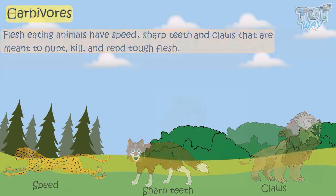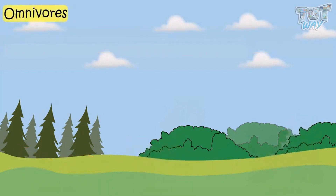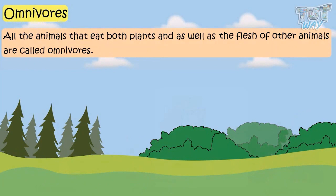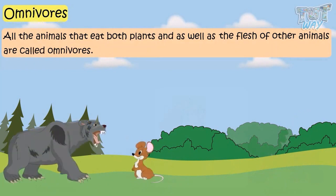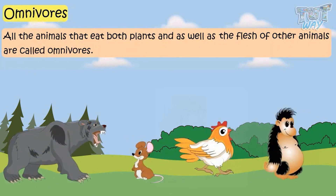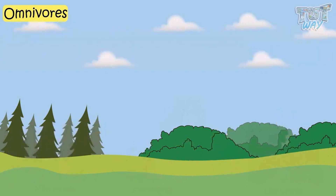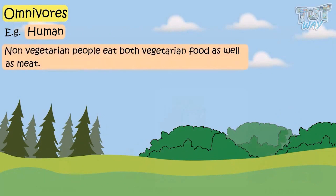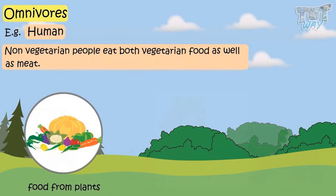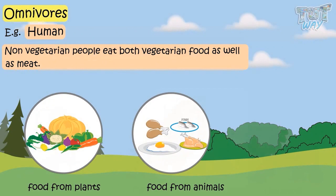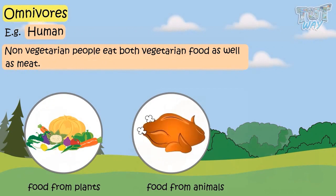Now let's see what omnivores are. All animals that eat both plants as well as flesh of other animals are called omnivores. For example, non-vegetarian people eat both vegetarian food — that is, food from plants — and meat. So non-vegetarian people are omnivores.